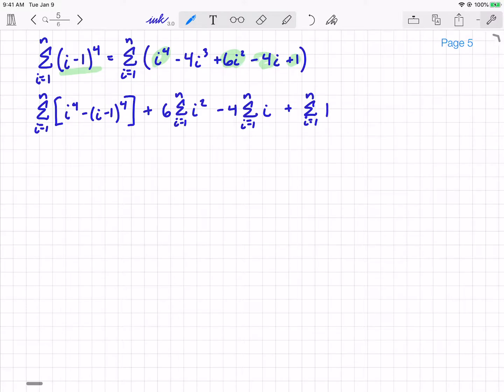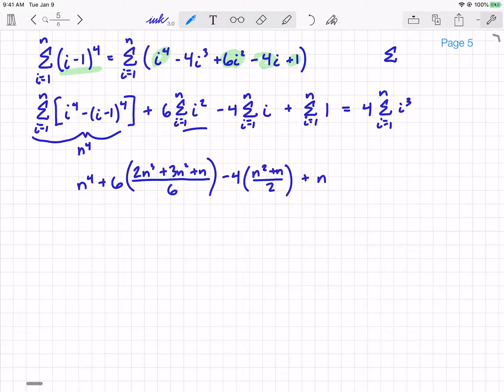Now I know from all of my work before that if I rewrite all of this, I'm going to end up with just n to the 4th. And again, all of this is equal to 4 times the summation of i cubed. Now smart people are going to just write the sigma without the i equals 1 and n, the indices, because they're going to assume that you know that it's all the same throughout. But what I end up with is n to the 4th plus 6. I know the summation of i squared, I just found it earlier. It was (2n cubed plus 3n squared plus n) all over 6. That's an expanded form. Then I got minus 4. Summation of i was (n squared plus n)/2. And then lastly, the summation of 1 from i equals 1 to n is just n.